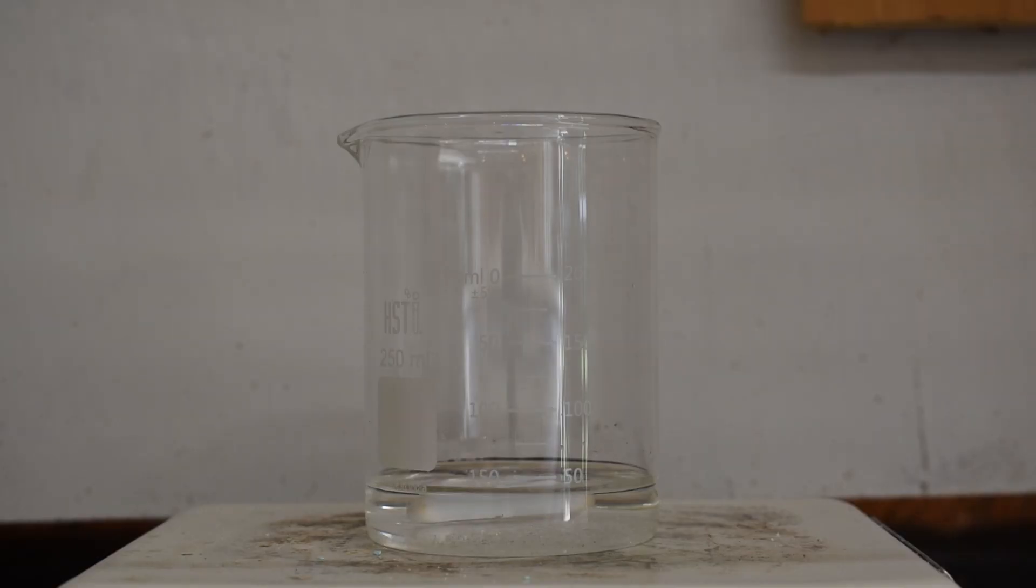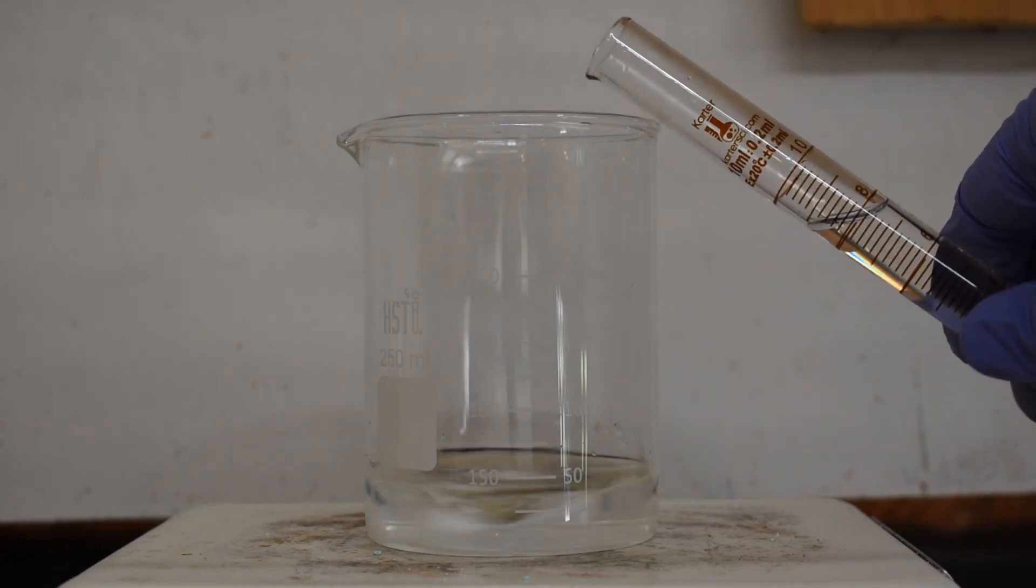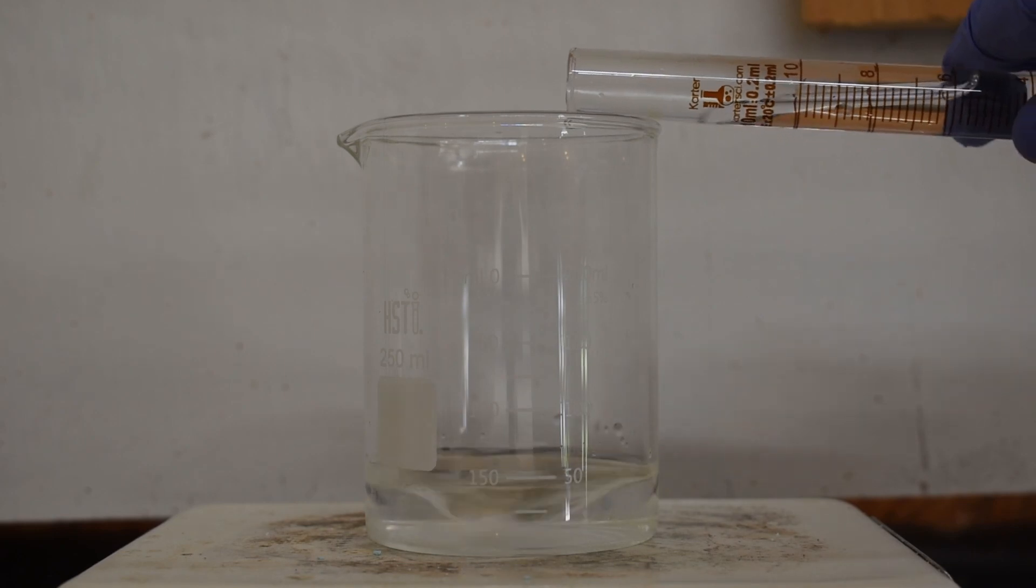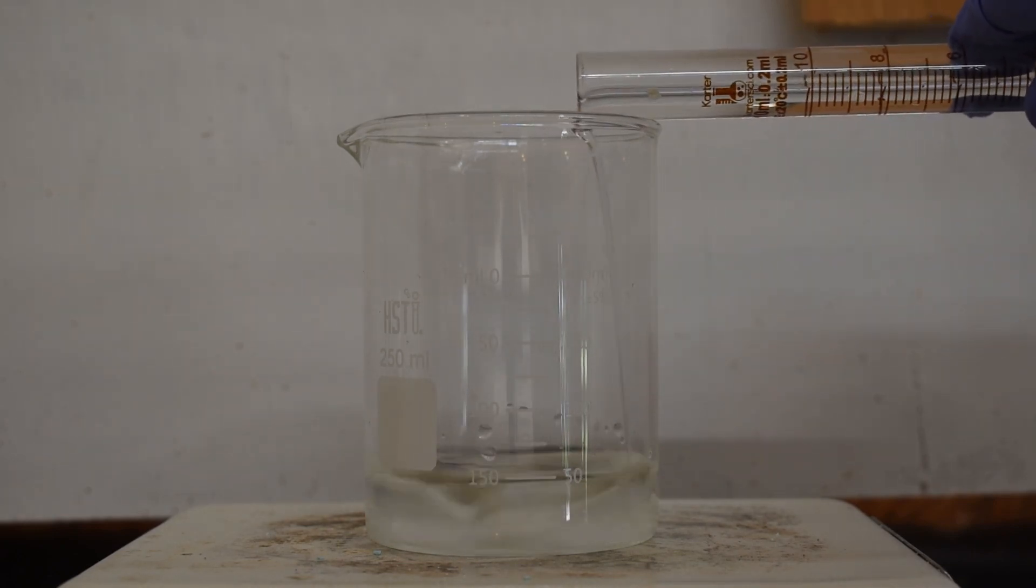I then began stirring the solution and once all of the potassium iodide was dissolved I added about 7 milliliters of 30% hydrochloric acid. This will protonate the iodide to form hydroiodic acid.